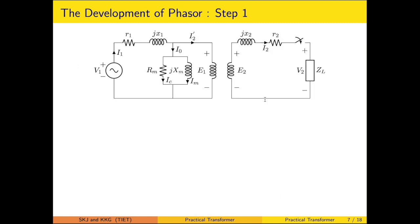The phasor development is illustrated through four steps. Step 1: when the switch is closed, the secondary carries current I2, so we represent the secondary first. Step 2: the ideal transformer is modeled. Step 3: the effect of the magnetizing or no-load current is accounted. Step 4: the primary or input side is modeled.